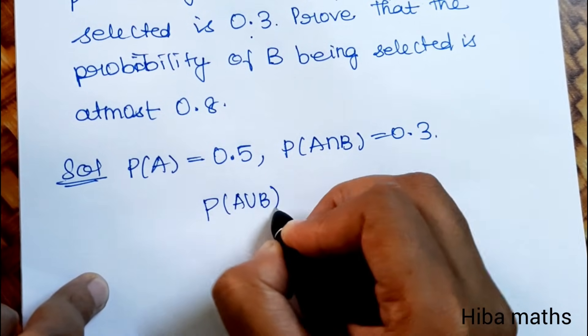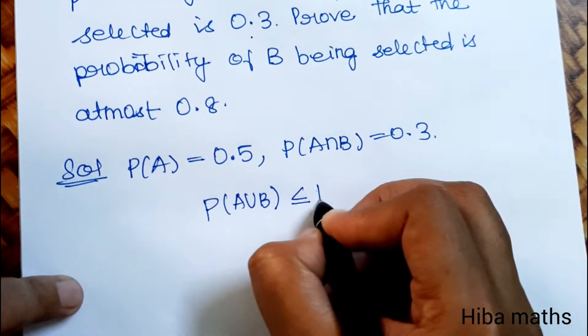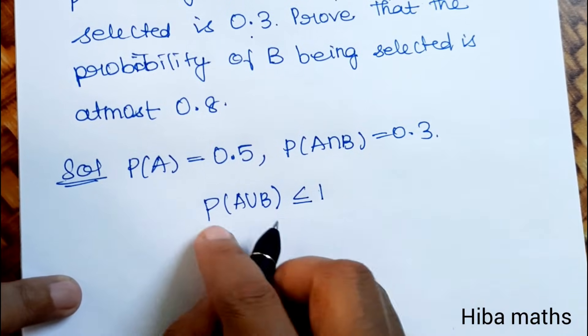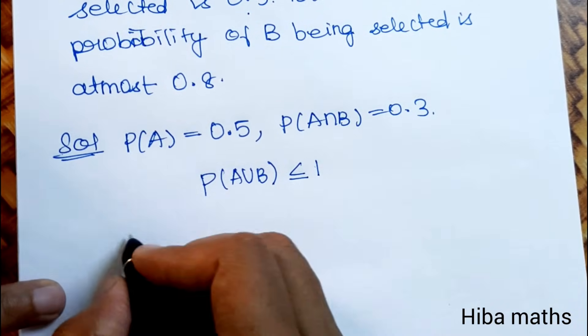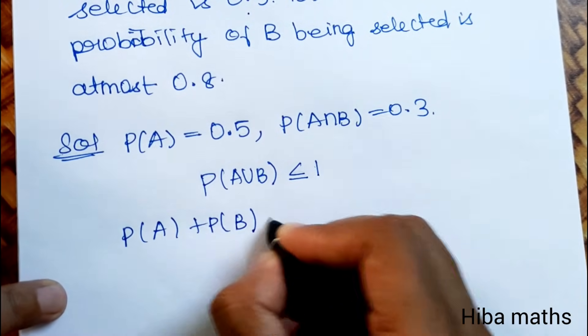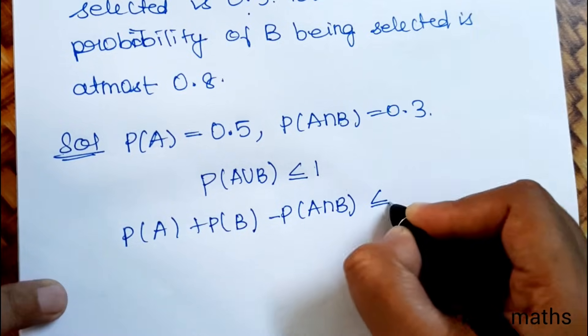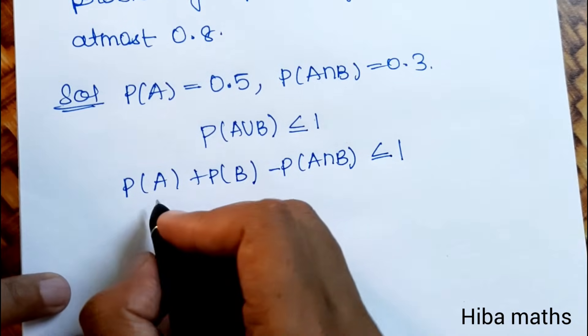P(A∪B) is less than or equal to 1. Now P(A∪B) is less than or equal to 1. P(A∪B) will be P(A) plus P(B) minus P(A∩B), which is less than or equal to 1.